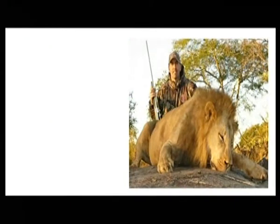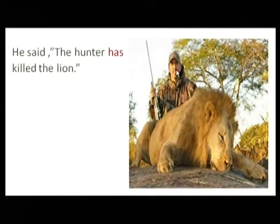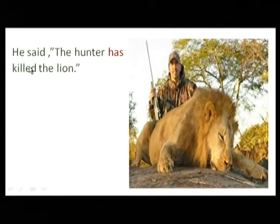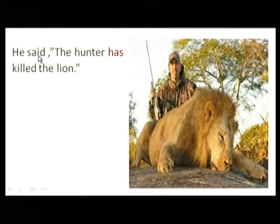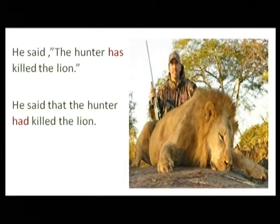Moving to the next slide. Looking at a picture of a lion and a hunter. He said, the hunter has killed the lion. Here we have 'has' plus third form of verb — that is present perfect tense. The reporting verb outside is 'said' (past). So 'has' will change into 'had'. He said that the hunter had killed the lion. 'Has' is changed into 'had'.